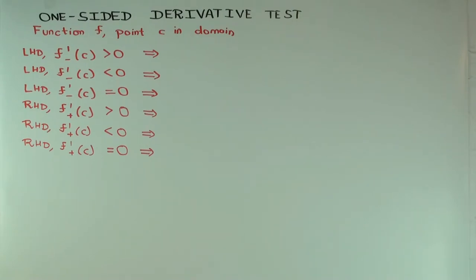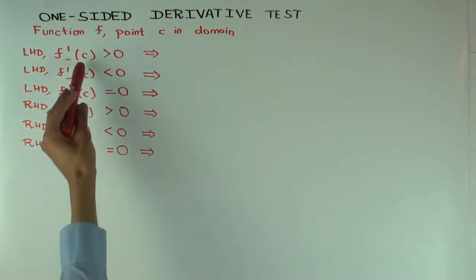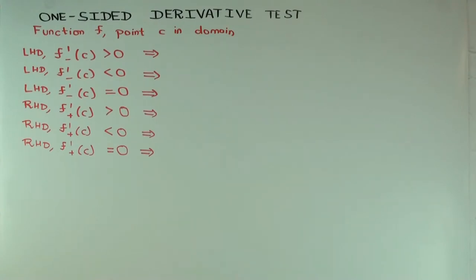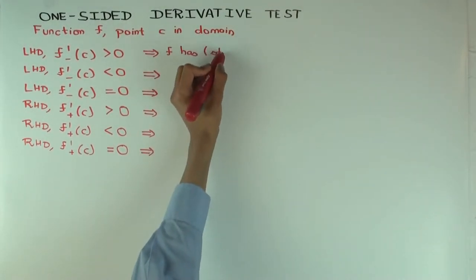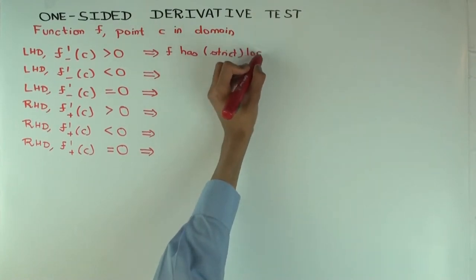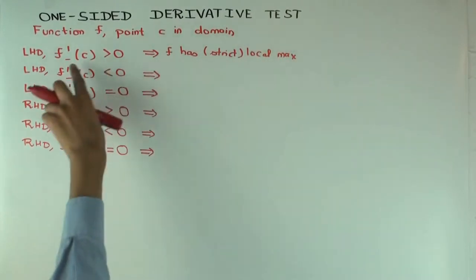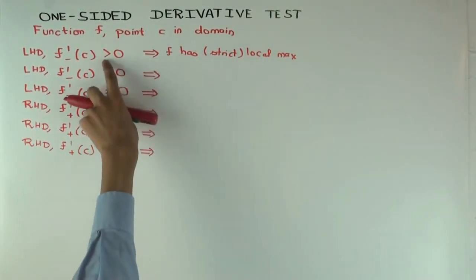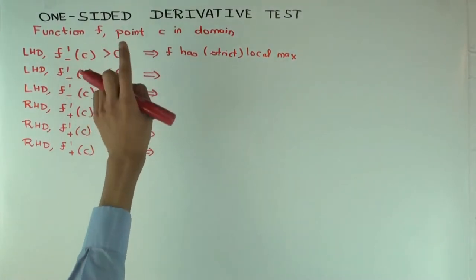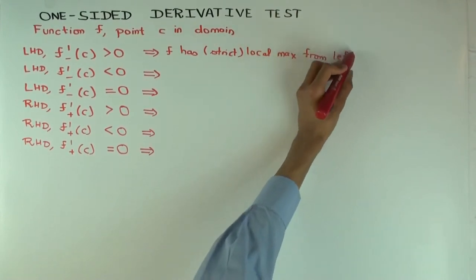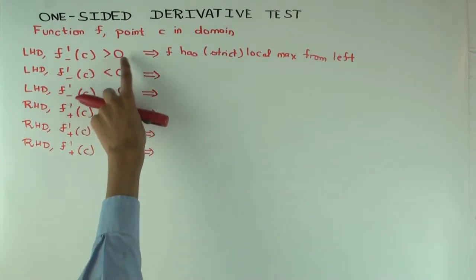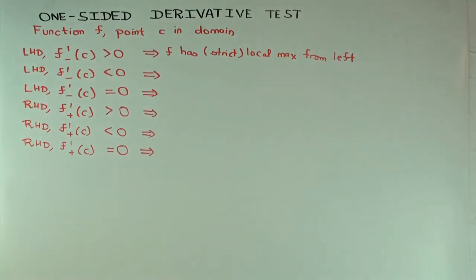Well, you can conclude that the value at the point will be bigger than values on the immediate left — it may not quite be increasing on the left, but it will still be a max from the left. In another video I went in the other direction and had to include the equal-to-zero case, but now going this direction we make the strong assumption that the derivative is strictly positive, which forces the function to have a strict local max from the left at the point.